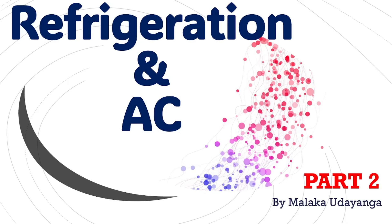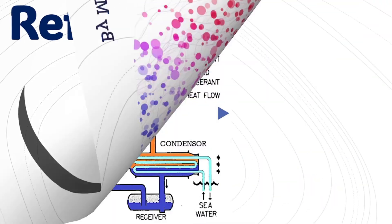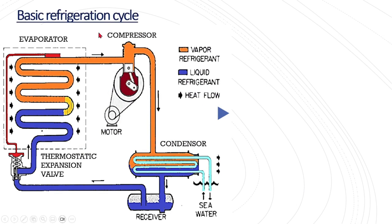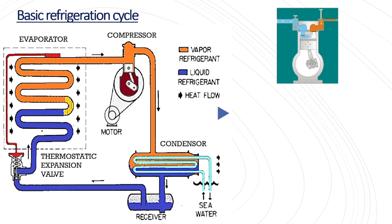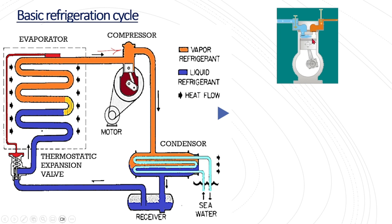Refrigeration and air conditioning, part 2. Basic refrigeration cycle: it consists of a compressor where gas from the evaporator outlet is received, and in the compressor this gas is compressed and its pressure is elevated, passing out to the condenser.